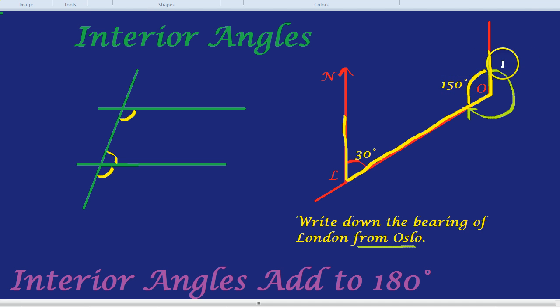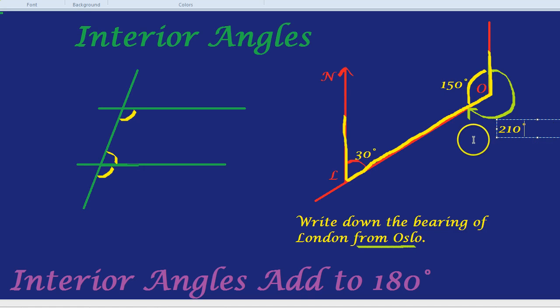That isn't quite the bearing, but it's darn close. If the bearing is the angle in green, because we always need to go clockwise to find bearings, we simply do 360 take away 150, because they go around a full circle, which is indeed 210 degrees. So using the magic of interior angles, we've solved a bearings question.